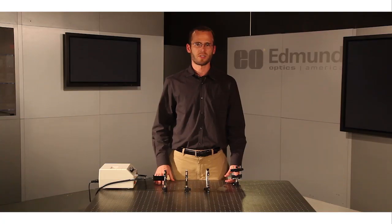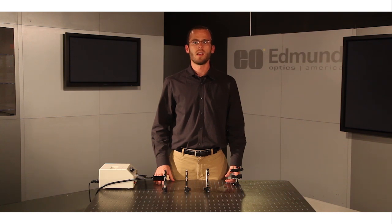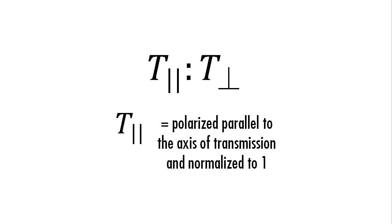It is common to specify the ratio of parallel to cross transmission of linear polarizers. This is known as the extinction ratio and is typically normalized. An example specification is an extinction ratio of 10,000 to 1, meaning you have 10,000 times more transmission for p polarized light than s polarized light.